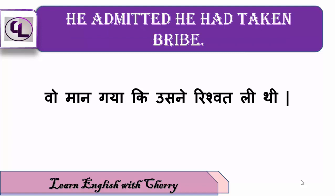He admitted he had taken a bribe — 'bribe' means 'rishvat.' Here I would like to tell you that this is a grammatical point: here we have 'had had' sentences used. Here we have 'had' with the third form of the verb. 'Take' — third form is 'taken.'